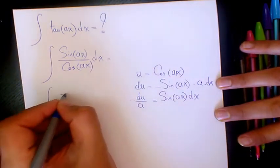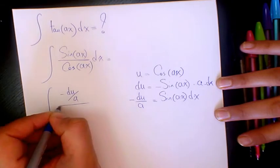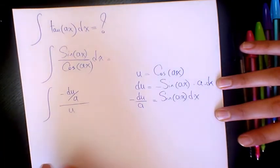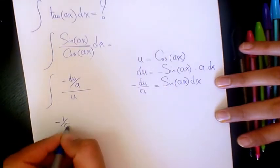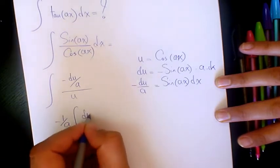So we have negative du over a divided by u. So you take it out, it's going to be negative 1 over a du over u.